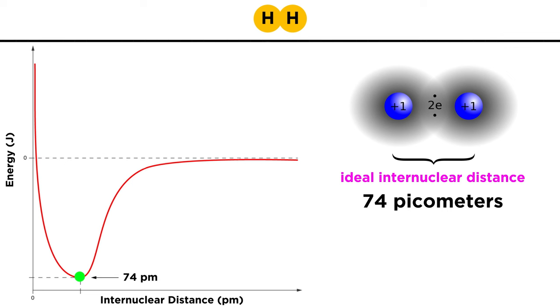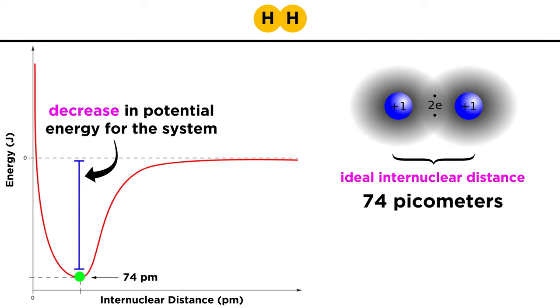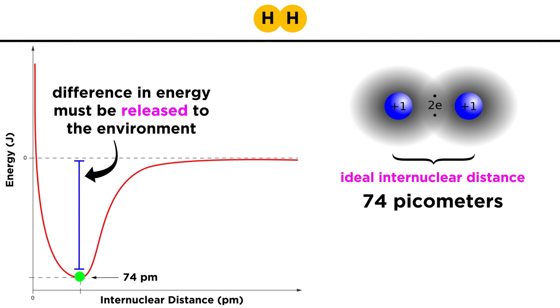This also shows why covalent bond formation is always an exothermic process, because there will always be a decrease in potential energy as a result of this kind of orbital overlap, and that difference in energy must be released to the environment.